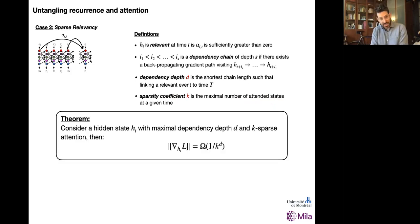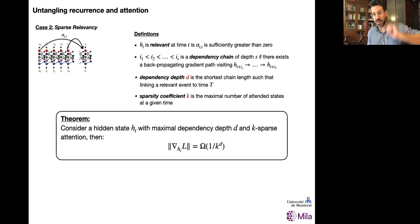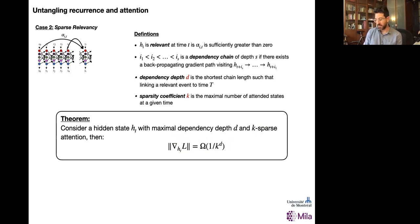Equipped with these definitions, we can prove the following theorem: if we consider a hidden state H_T with maximal dependency depth D and K-sparse attention, then we know that the norm of this term in the gradient is going to be lower bounded by 1/K^D. This was proven by Giancarlo, the student who led this theory part of the paper. It's highly non-trivial but gives us a very nice scaling property for these gradients. Recall this is a dominant term responsible for vanishing and exploding. This scaling property is one of the main contributions of this paper.